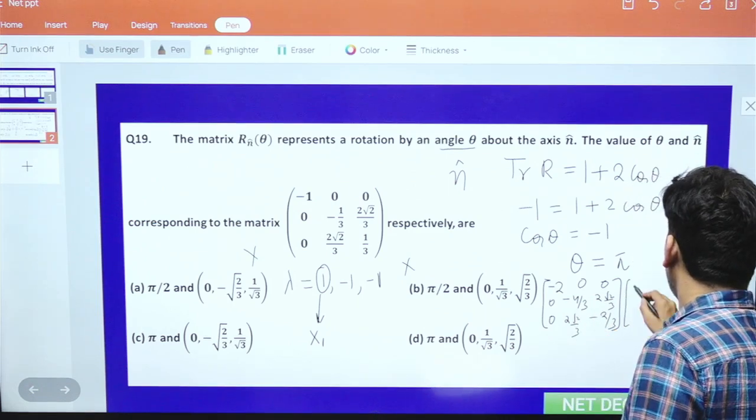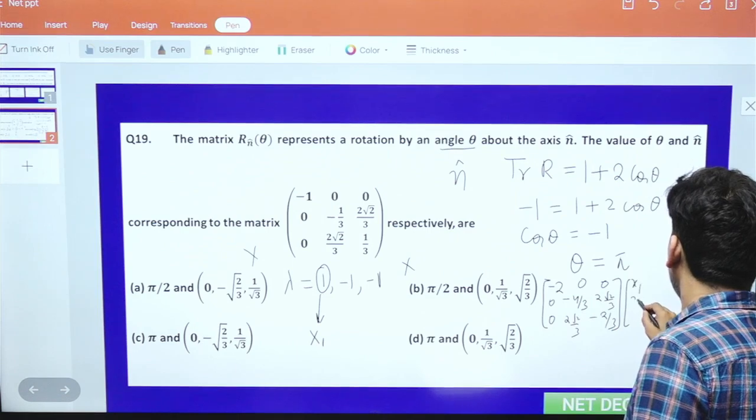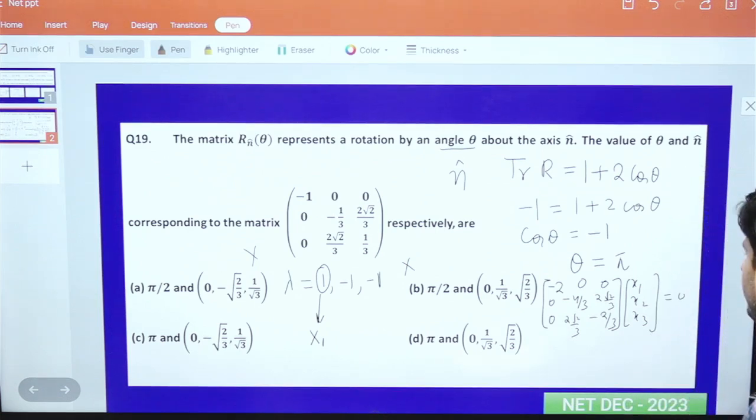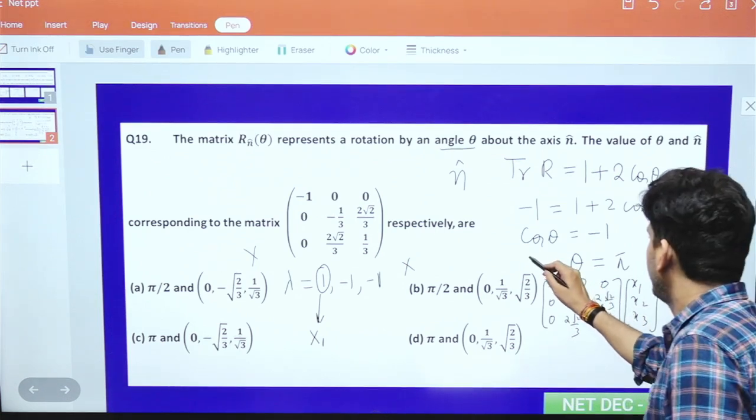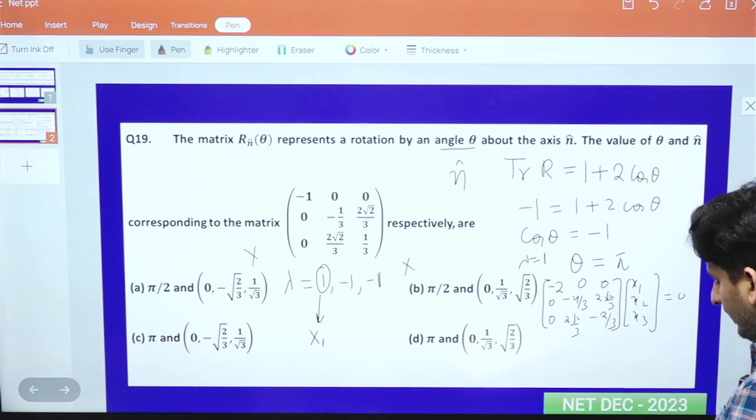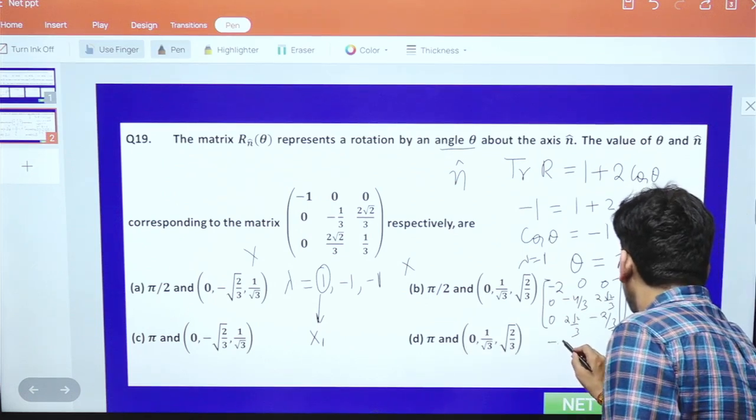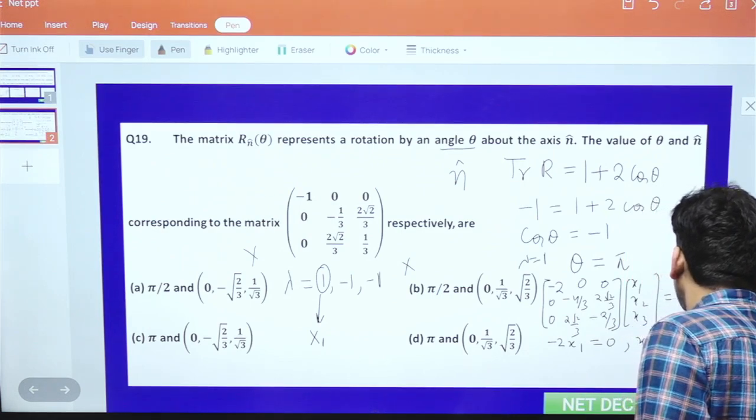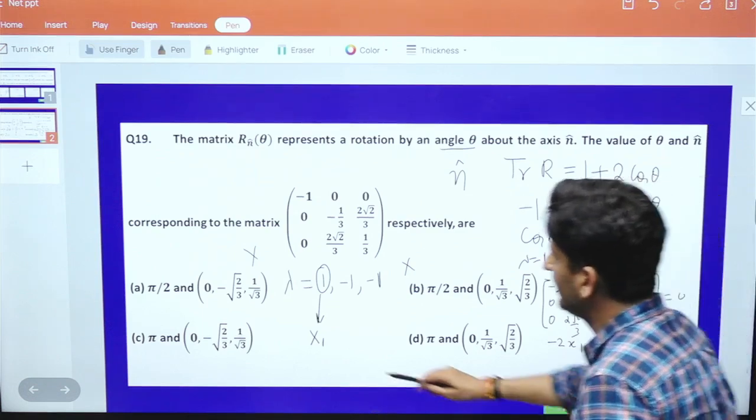Put the vector [x1, x2, x3] here equal to 0. Calculating the eigenvector for lambda equals 1, we get minus 2 x1 equals 0, so x1 equals 0.